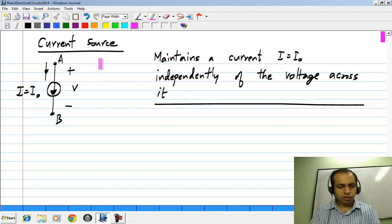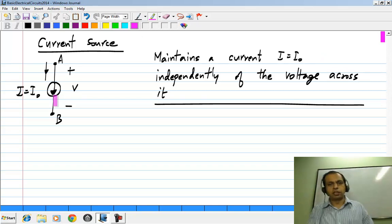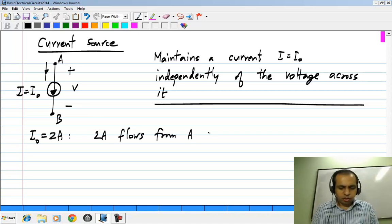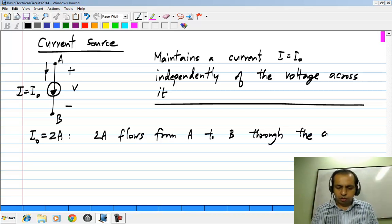As before, the arrow indicates the direction in which the current is defined. That current itself could be positive or negative. If I naught happens to be 2 amperes, it means that 2 amperes flows from A to B through the current source.